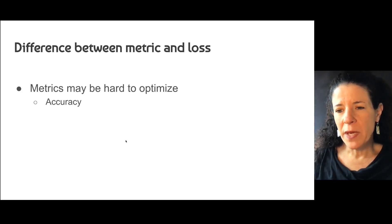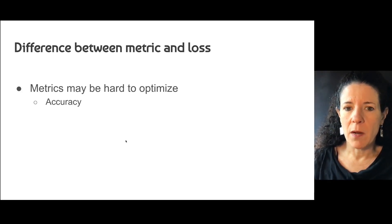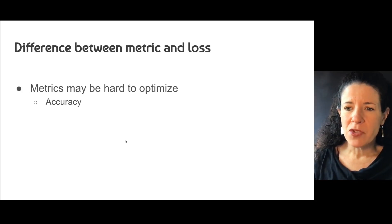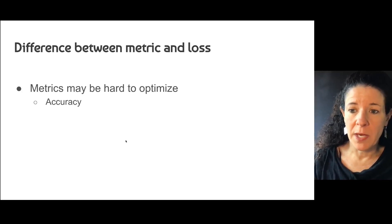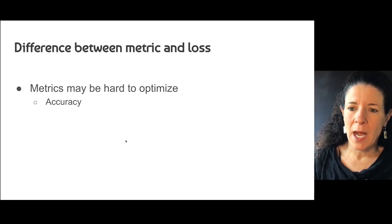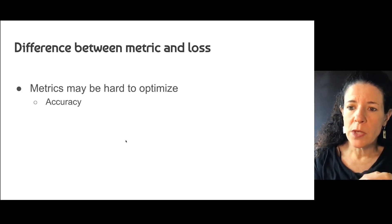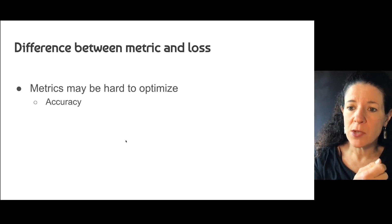You may think: why don't we just try to optimize accuracy right away? It's just that it's hard to directly optimize accuracy. To get an accuracy, we usually need a hard prediction. And usually when we optimize, we are trying to get soft predictions — we're trying to get probabilities.